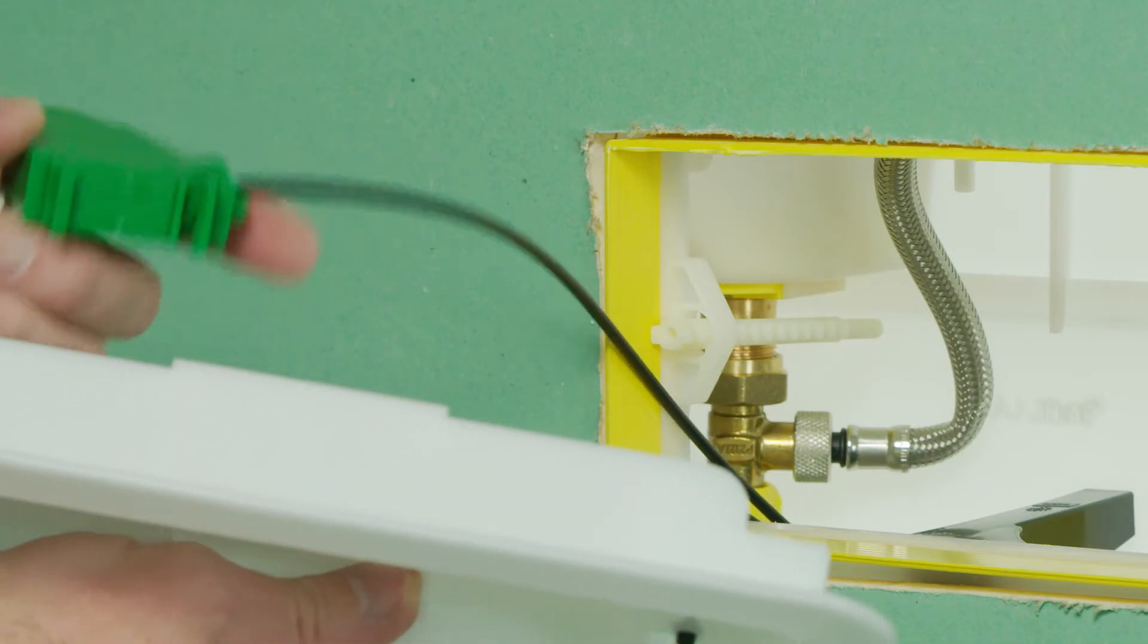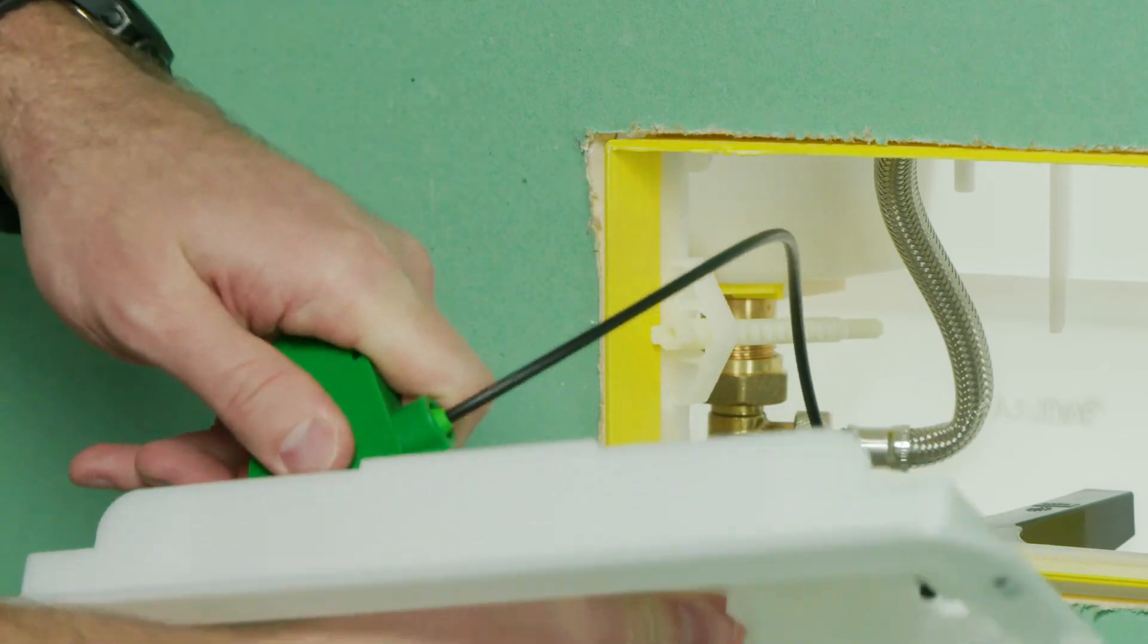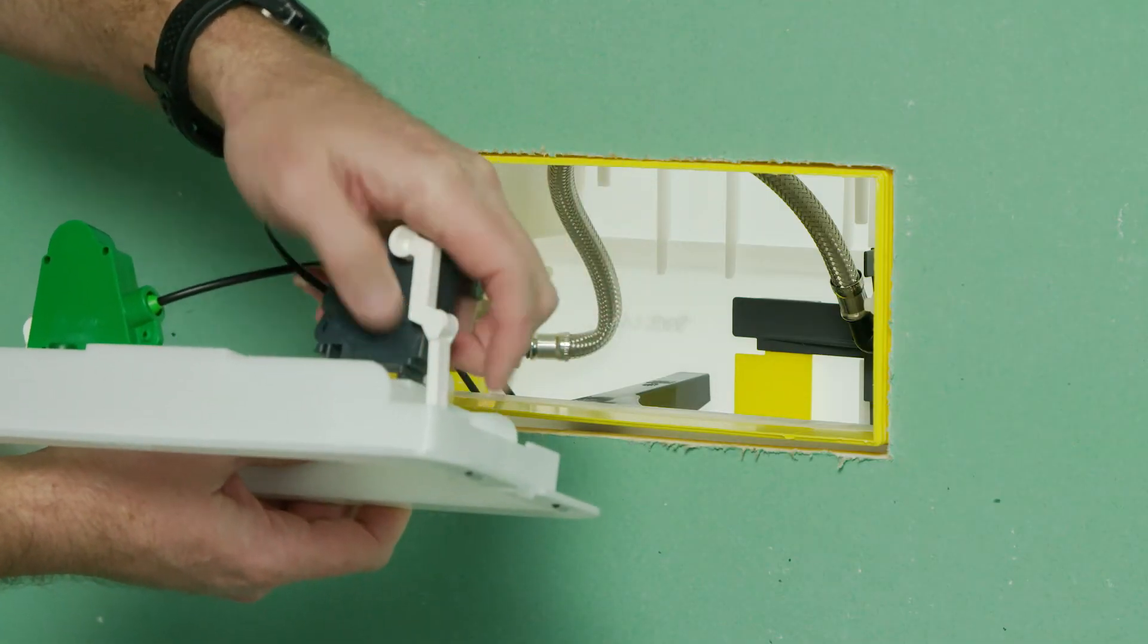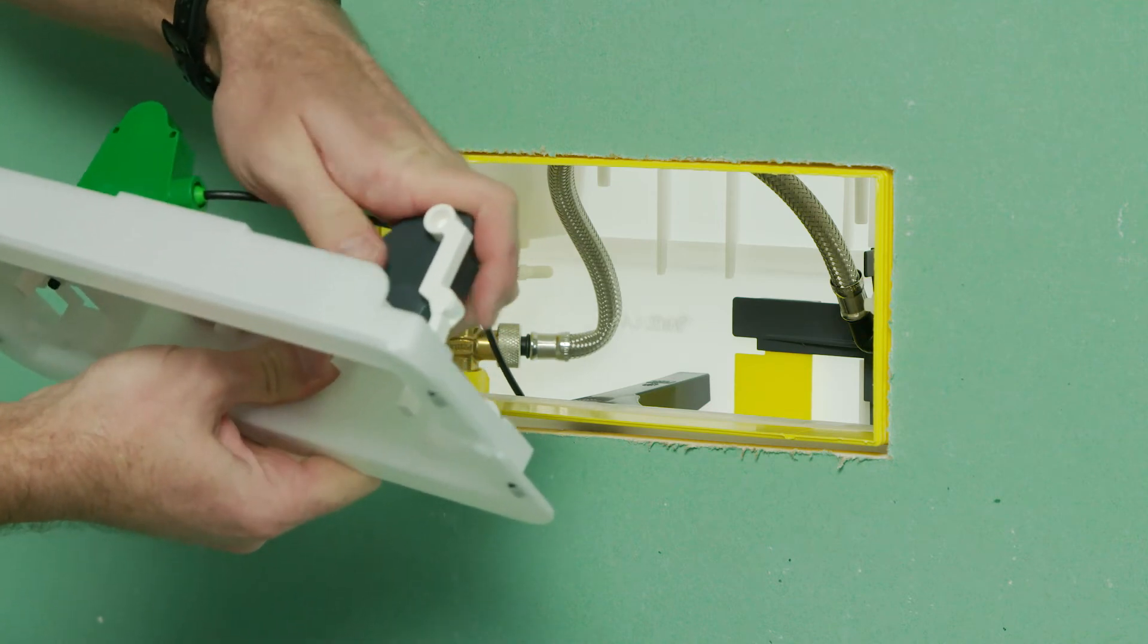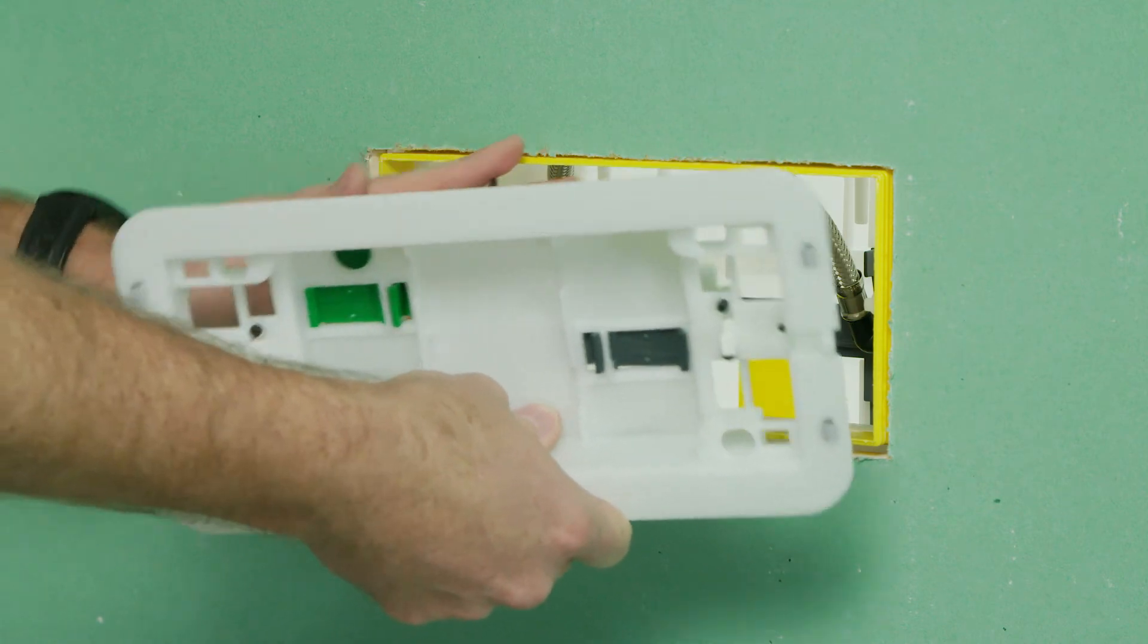Attach the green Bowden cable to the green side of the flush plate. Attach gray Bowden cable to other side of flush plate. Make sure cables are completely inside tank.